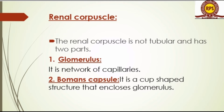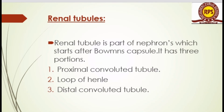The second part is the Bowman's capsule, which is a cup-shaped structure that encloses the glomerulus. The Bowman's capsule is cup-shaped and contains the glomerulus — the network of capillaries — inside it, together maintaining this cup-shaped structure.